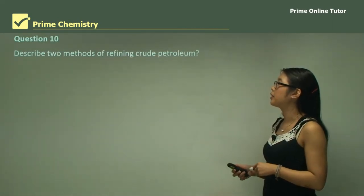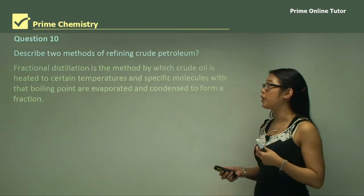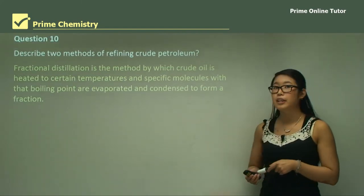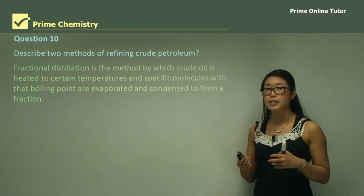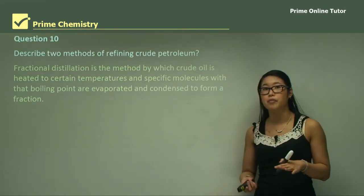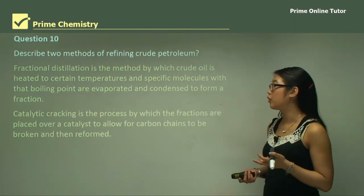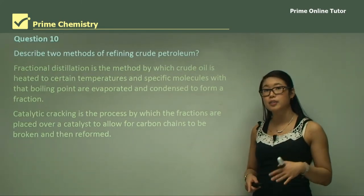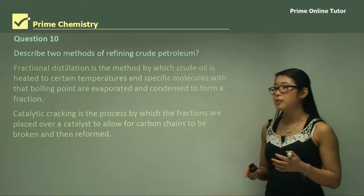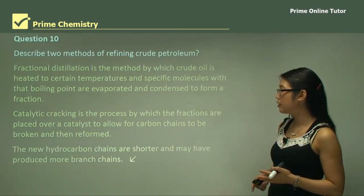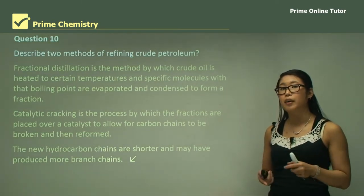Question ten: describe two methods of refining crude petroleum. First, fractional distillation — crude oil is heated to certain temperatures and molecules within a range of boiling points evaporate, then condense to form a fraction of hydrocarbons with similar boiling and melting points. Second, catalytic cracking — the fractions are placed over a catalyst that reduces activation energy, allowing carbon chains to be broken and reformed into shorter chains, potentially with more branch chains, producing new hydrocarbon compounds.